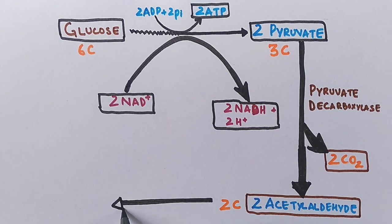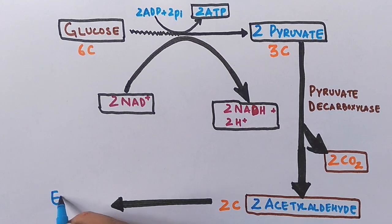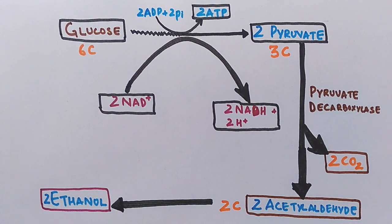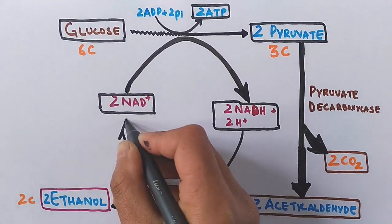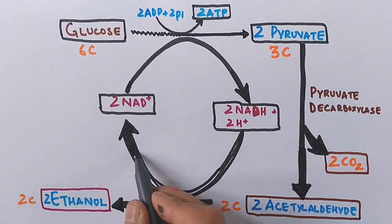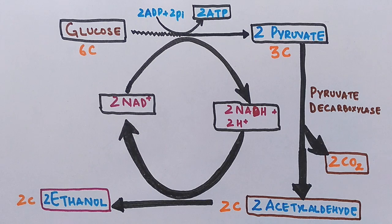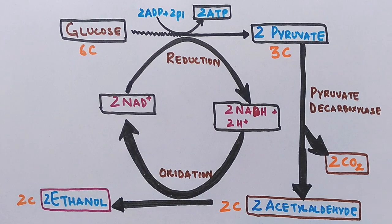The intermediate acetaldehyde is then converted into ethanol, the final product, giving two molecules of ethanol. This reaction is catalyzed by the enzyme alcohol dehydrogenase. In this last step, NADH is oxidized back to NAD⁺. Since ETC is absent in fermentation, NADH cannot produce ATP through that route, so it is recycled back to NAD⁺ to keep it available for glycolysis. This cycle of reduction and oxidation continues in yeasts and some bacteria.